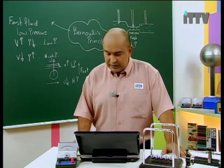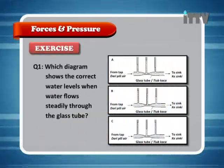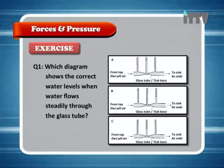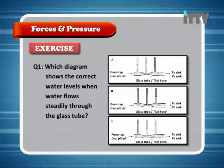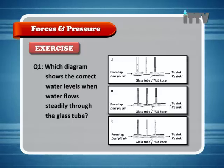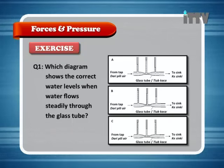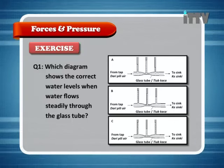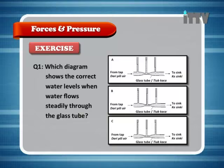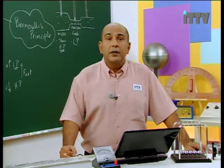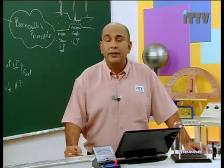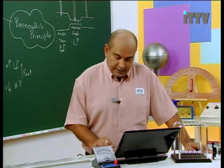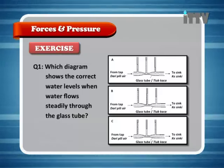Practice question: Which diagram shows the correct water levels when water flows steadily through the glass tube? Look at the diagrams, work out where the high pressure and low pressure are, which will push the level higher and which lower. The answer is C.